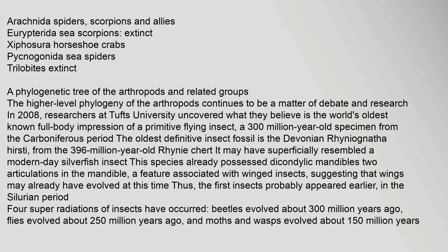The higher-level phylogeny of the arthropods continues to be a matter of debate in research. In 2008, researchers at Tufts University uncovered what they believe is the world's oldest known full-body impression of a primitive flying insect, a 300-million-year-old specimen from the Carboniferous period. The oldest definitive insect fossil is the Devonian Rhiniognatha hirsti, from the 396-million-year-old Rhini chert. It may have superficially resembled a modern-day silverfish insect. This species already possessed dicondylic mandibles, a feature associated with winged insects, suggesting that wings may already have evolved at this time.